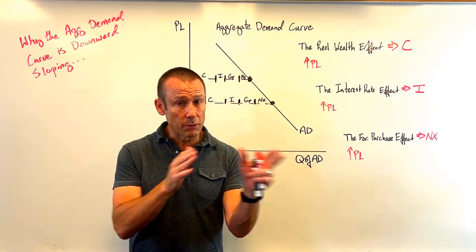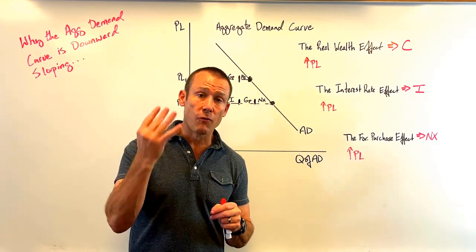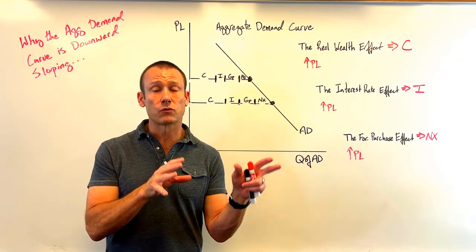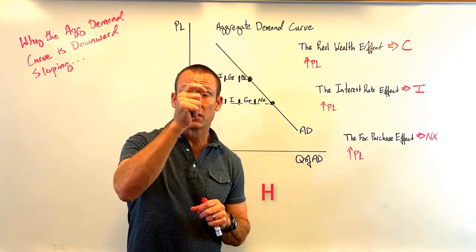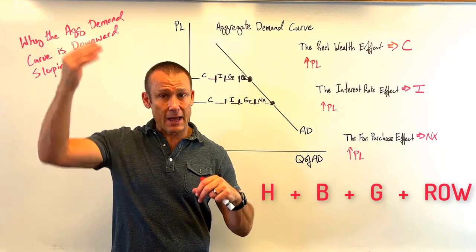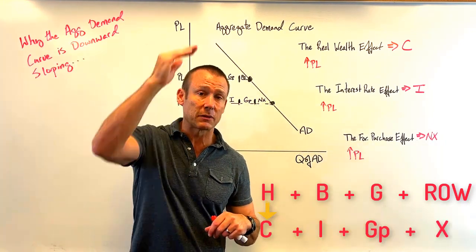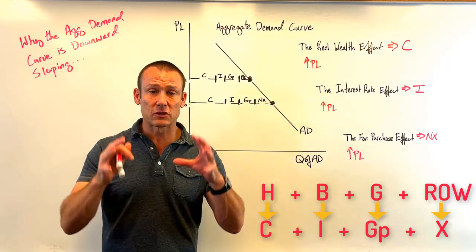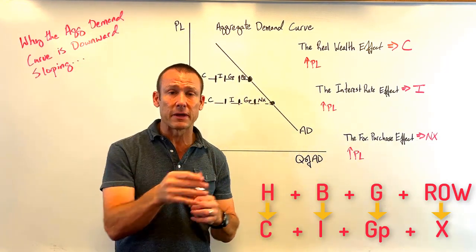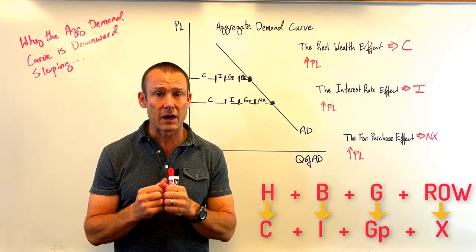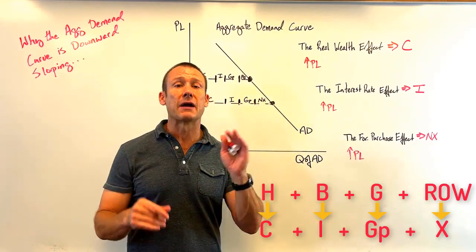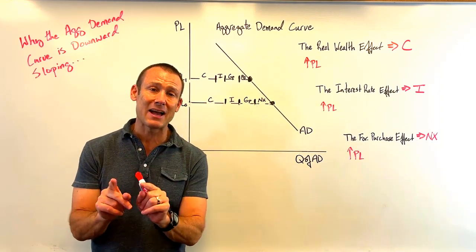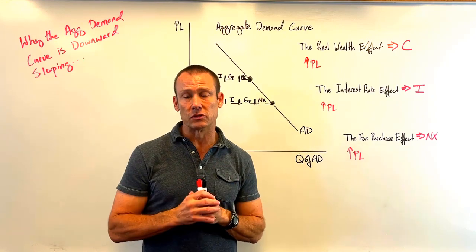There are four demanders in our macro economy of final goods and services: households, businesses, government, and the rest of the world. Households spend money — that's consumption. Businesses spend money — that's investment. Government spends money — that's government purchases. The rest of the world spends money — that's exports. And we subtract out spending on imports because aggregate demand is the total demand for domestically produced goods and services.